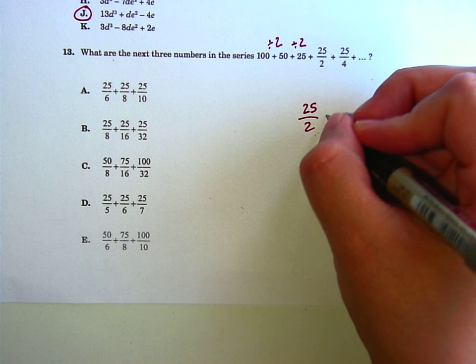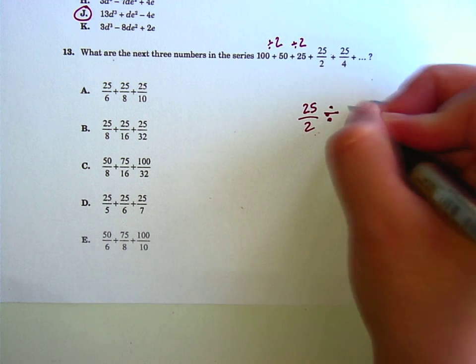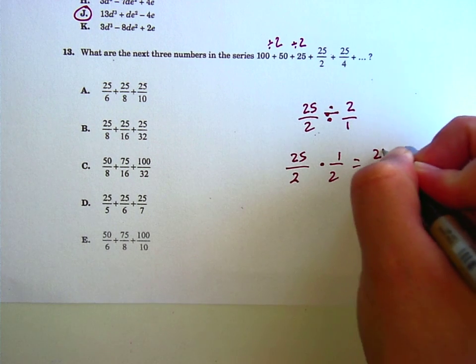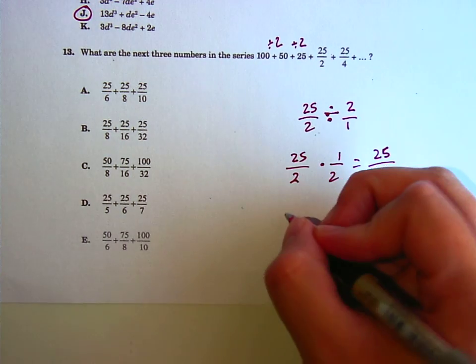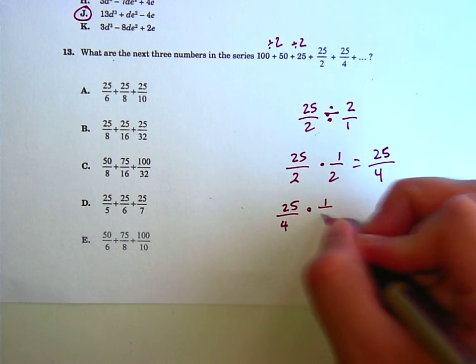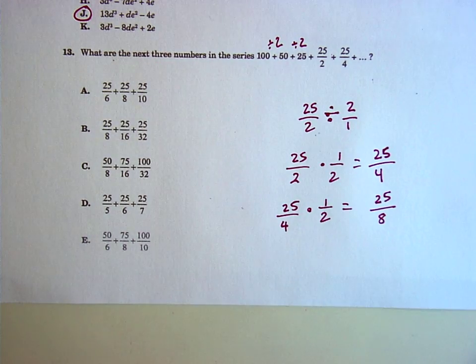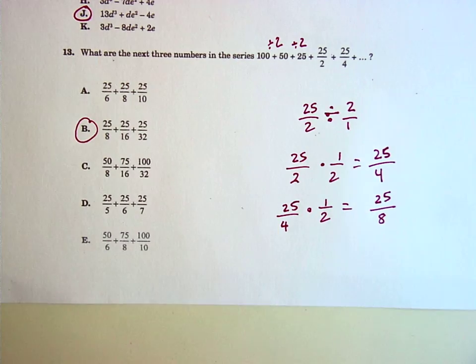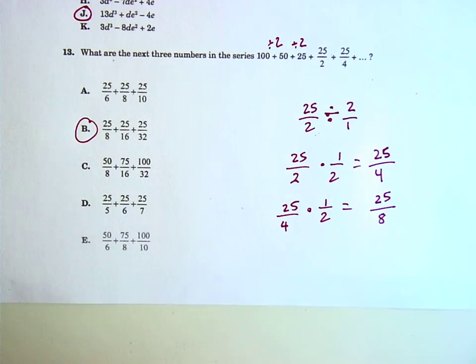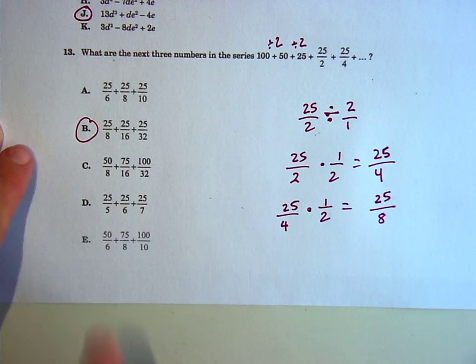So, like, if I was dividing this by 2, that's the same thing as 25/2 times 1/2, which makes 25/4. So, the next time, I'd take 25/4, which is right there. And again, I'd divide by 2, which is the same thing as multiplying by 1/2, and I get 25/8. So, you can kind of see the pattern going on here. This is the only one that starts with 25/8, but it would just keep doubling on the bottom, because you would just keep multiplying by 2, which makes 16 and 32 on the bottom.